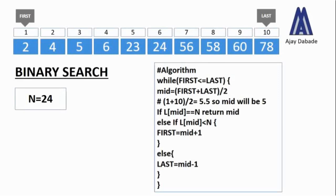Hello everyone and welcome back once again, this is Ajay. Today we are going to learn about binary search, which is one of the searching techniques by which we search for a particular item or number in a given list. In binary search, what we do is we divide the list into two — it is called binary search because we keep on dividing the list into two. The number that we are searching for will exist in either of the two halves; we keep that half and discard the other. This is how binary search works.